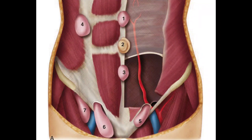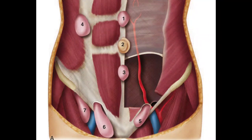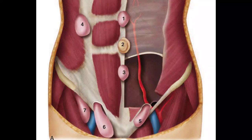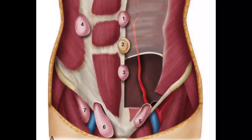Number five is for the direct inguinal hernia — that is the area where the direct inguinal hernia enters. Number six is indicating the indirect inguinal hernia — that is the place where indirect hernia usually occurs. Number seven is the femoral hernia. So these are the sites for the hernia, and this diagram explains very beautifully the exact sites for all these hernias.